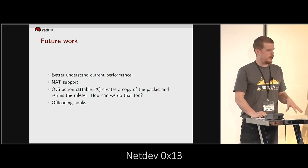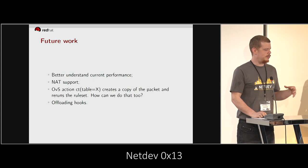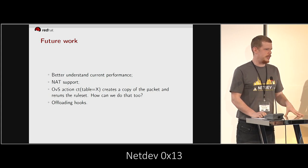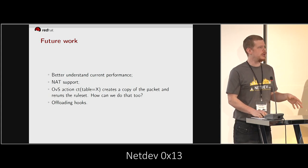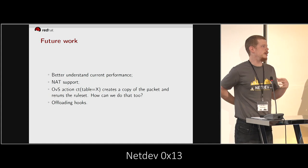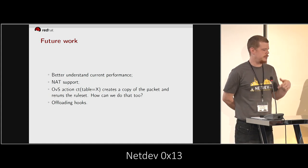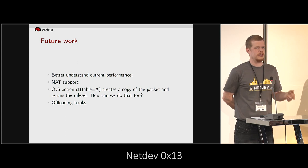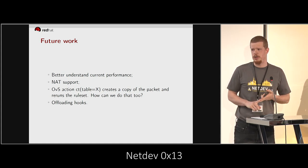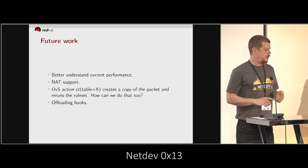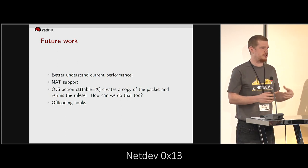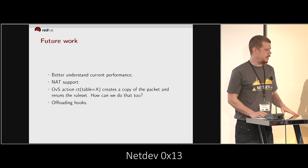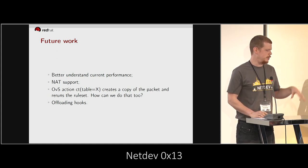So for future work on the TC side, we want to better understand the performance. We have some numbers doing a more tuned setup where we run C-100K, and we're also working on getting to C-1M — that's 100,000 and 1 million connections. We do need to add some integration for NAT actions, like to actually perform the NAT transformation on the packet as it passes through the data path.